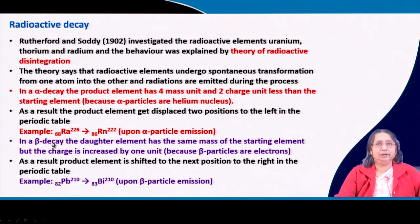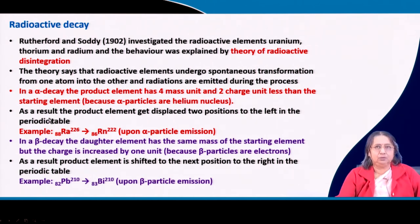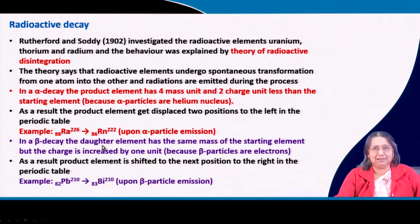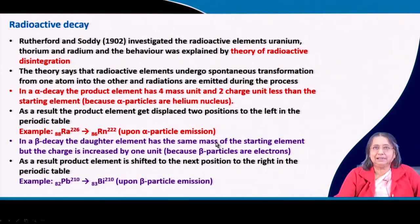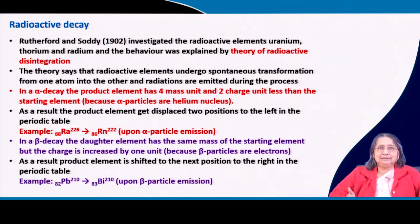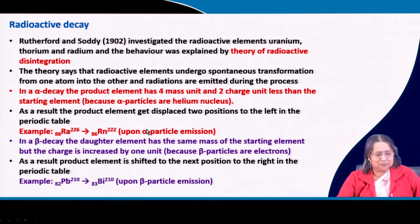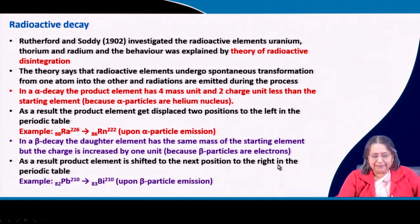In a beta decay, when some nucleus radiates a beta particle, the daughter element has the same mass as the starting element because beta particles are electrons and electrons have no mass. However, the charge is increased by one unit — one negative charge is lost, meaning one positive charge is gained. Because beta particles are electrons, the product element is shifted to the next position to the right in the periodic table.